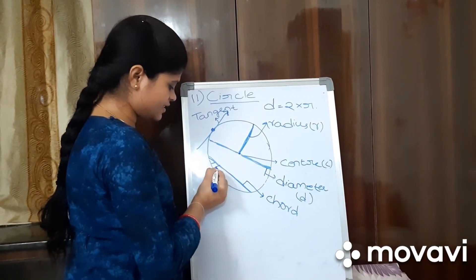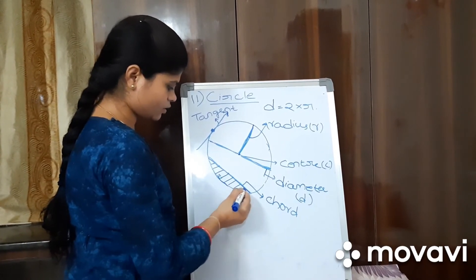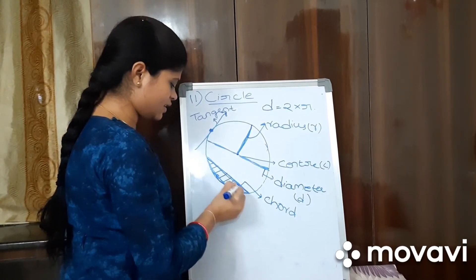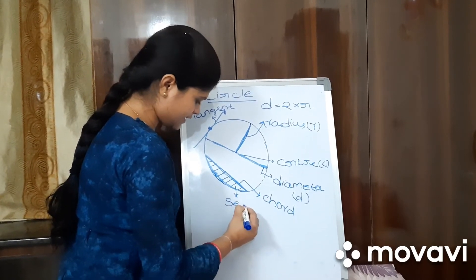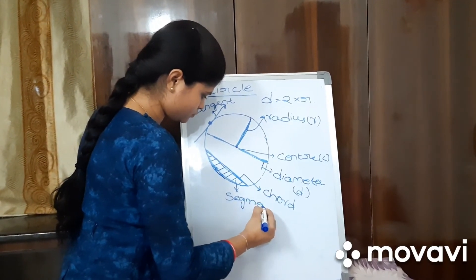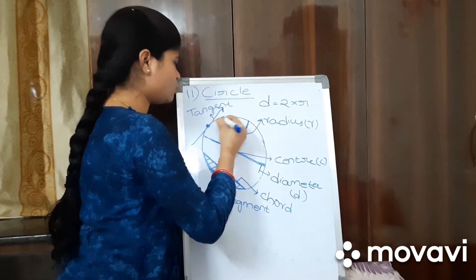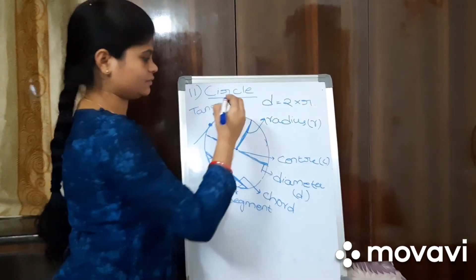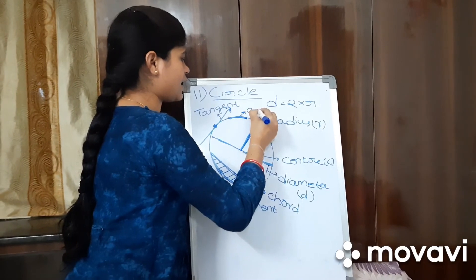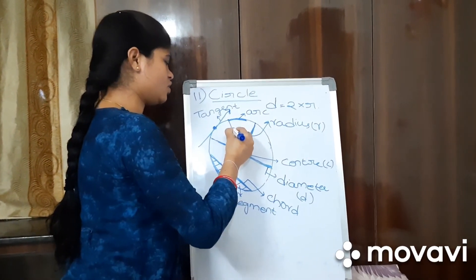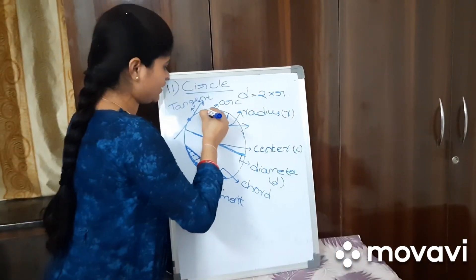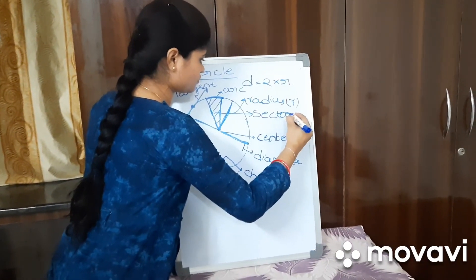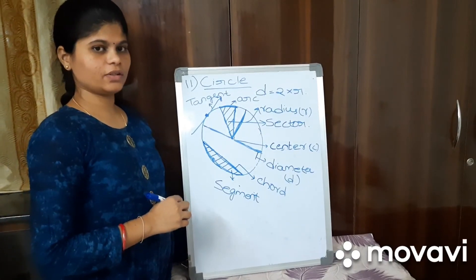Next is segment. A segment is the region between the arc and the chord — this part is called a segment of a circle. The curve between two points on a circle is called an arc. If we draw two lines from the center to an arc, that portion of the circle is called a sector. Hope everyone understood this video. Thank you.